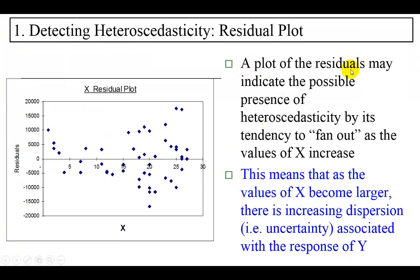So I note here that a plot of the residuals may indicate the possible presence of heteroscedasticity by its tendency to fan out, as you kind of see here, as the values of X increase.